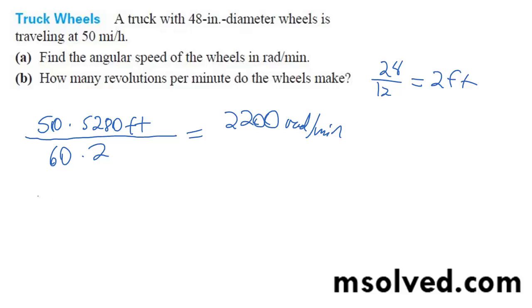And your revolutions per minute is just going to be your theta value divided by 2 pi, which is going to be 2,200 radians per minute divided by 2 pi.